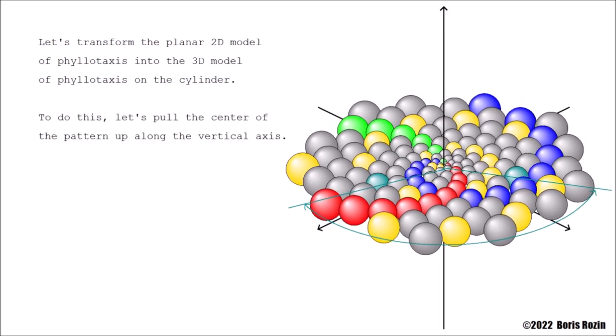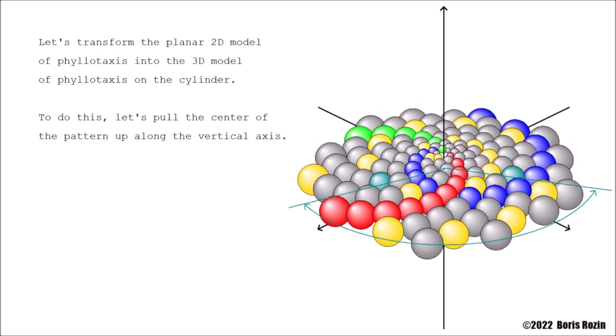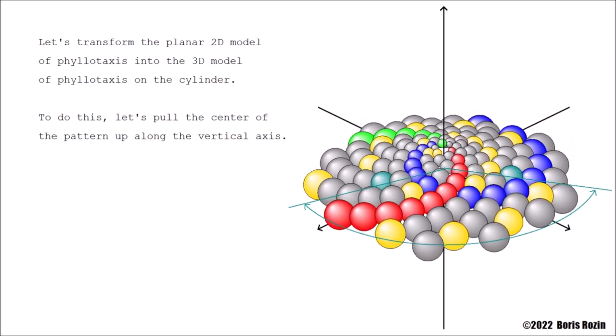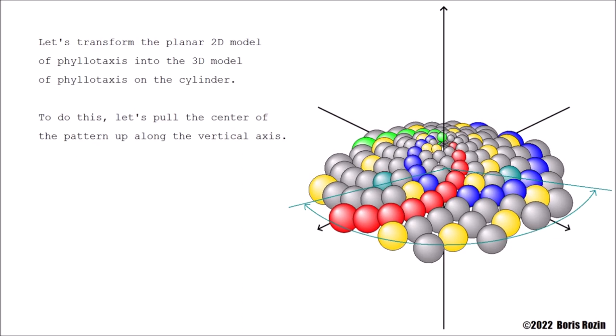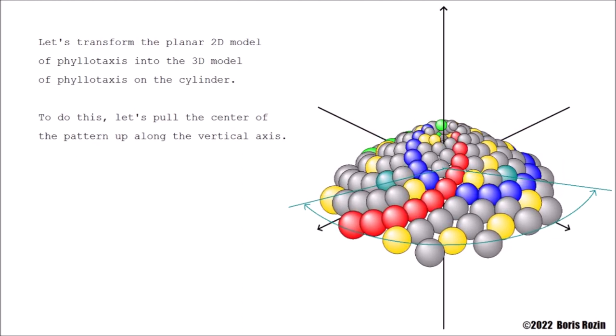Let's transform the planar 2D model of phyllotaxis into the 3D model of phyllotaxis on the cylinder. To do this, let's pull the center of the pattern up along the vertical axis.